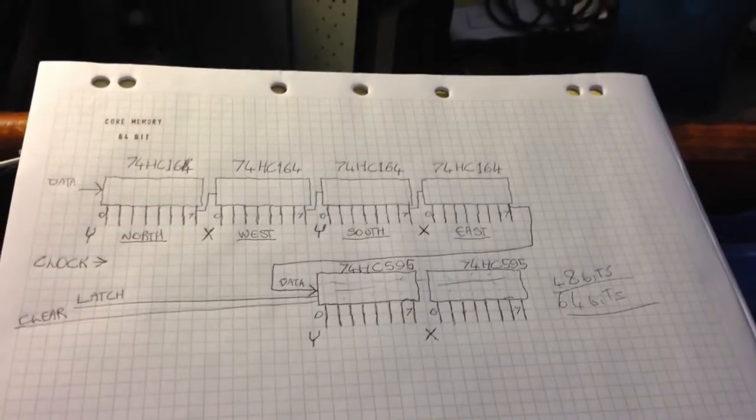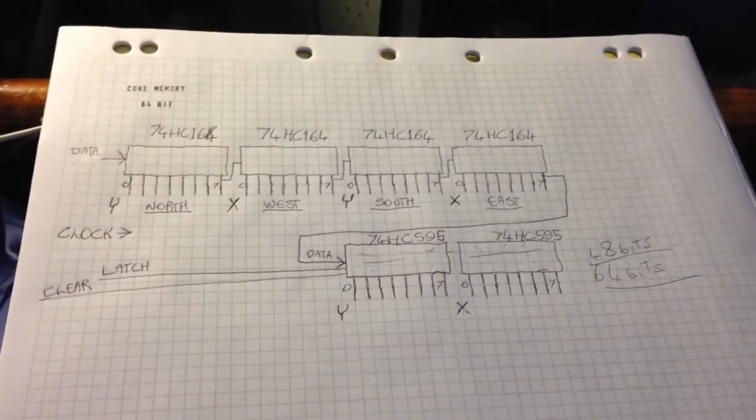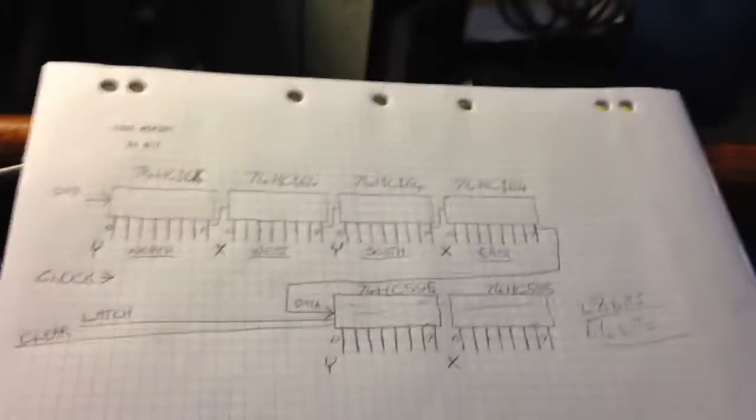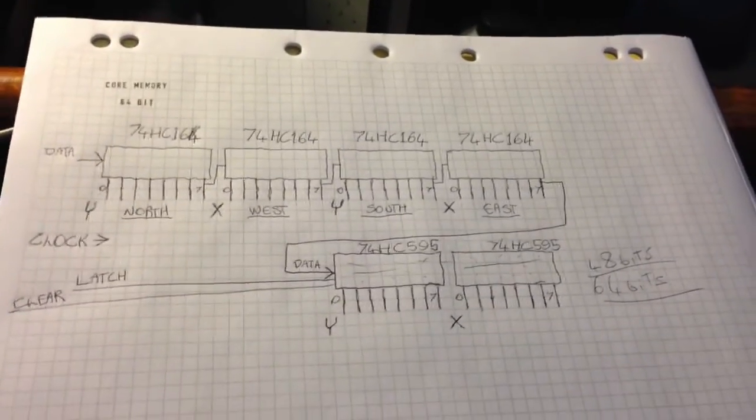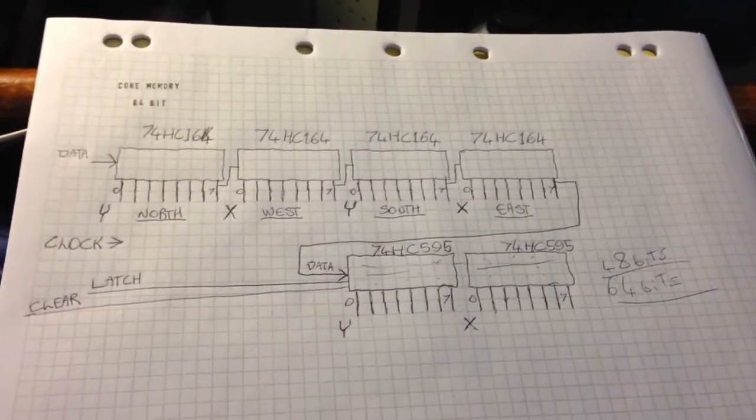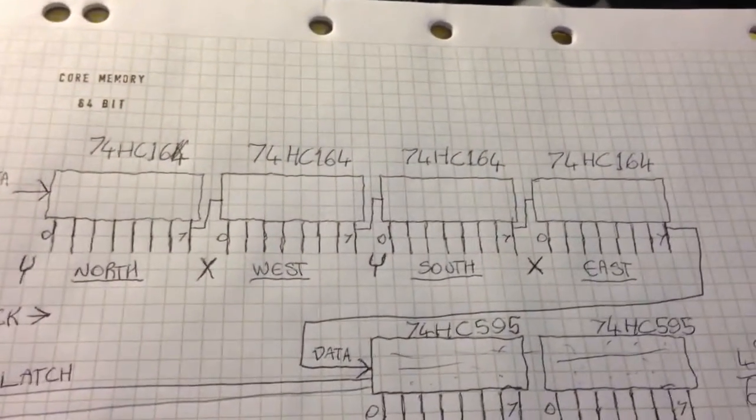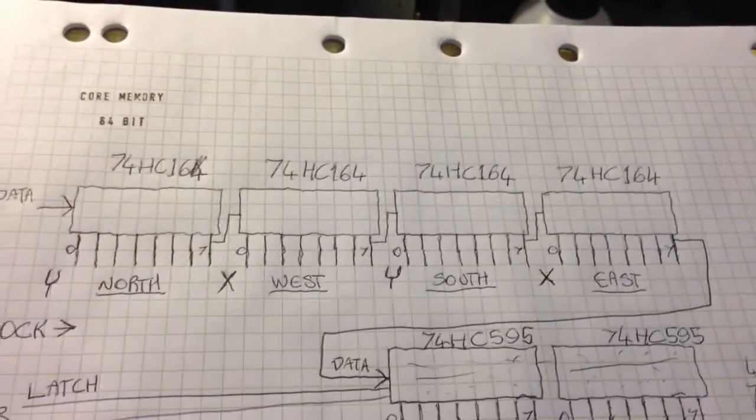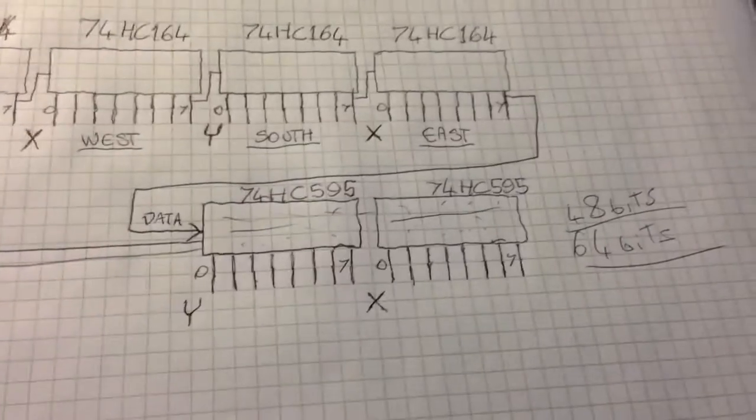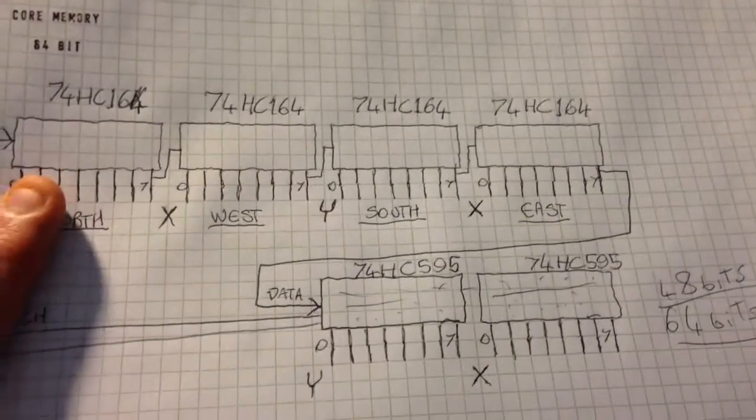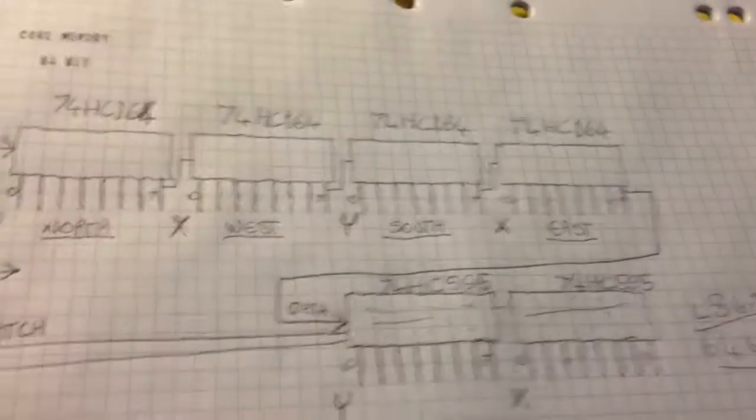Hi guys I'm in bed with a sore back so I thought it would be a good time to explain how I did the serial interface for the core memory with the objective of using minimal control lines possible connected to the microcontroller. So I've got 74HC164 ordinary shift registers that are non latching and then two 74HC595 latching shift registers and they're all daisy chained data input straight to the 74HC164.